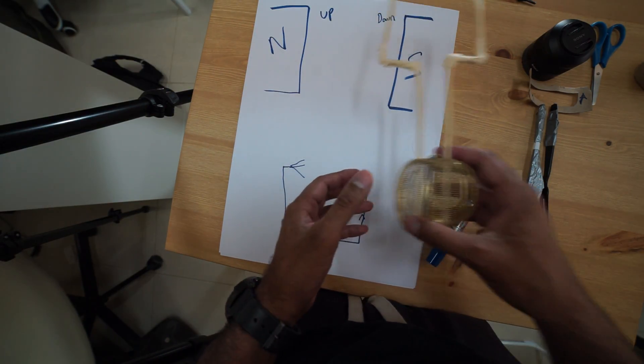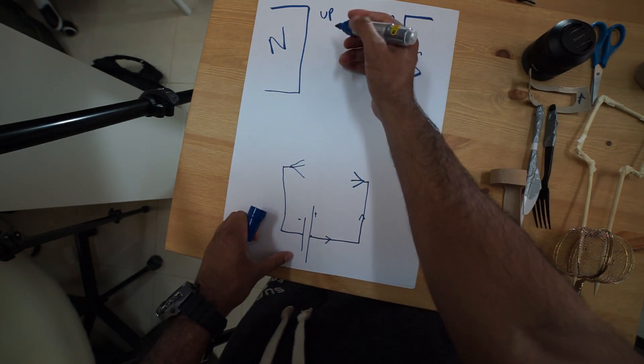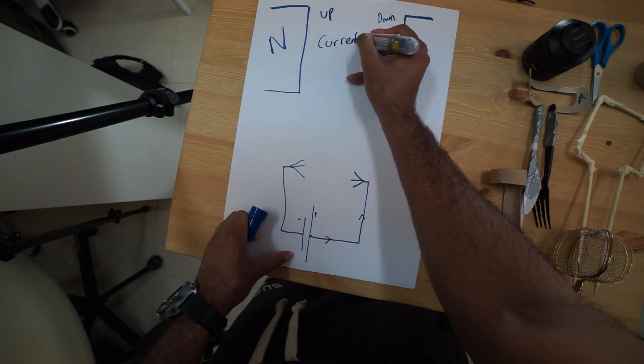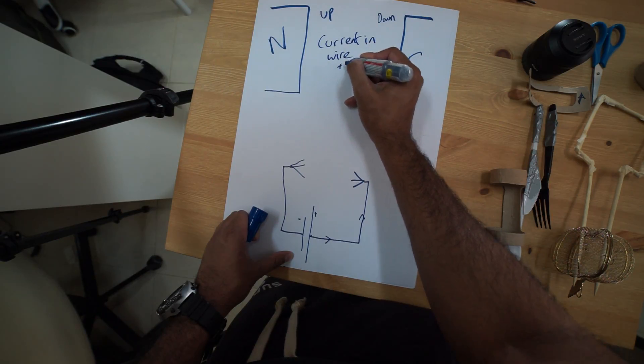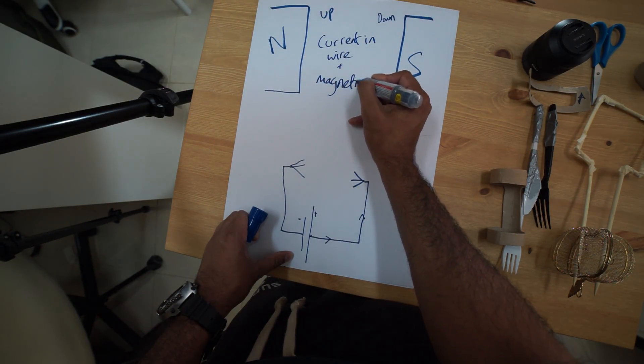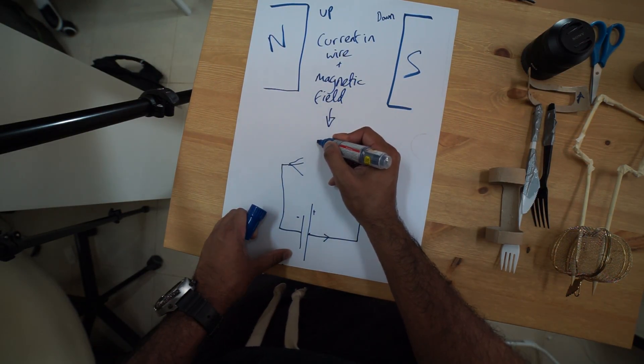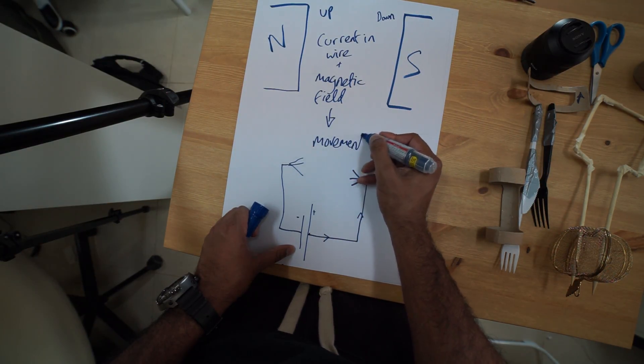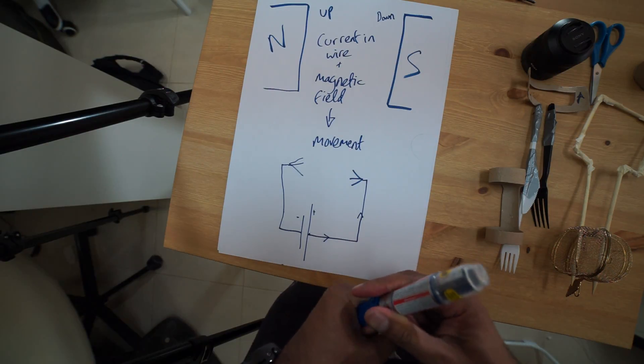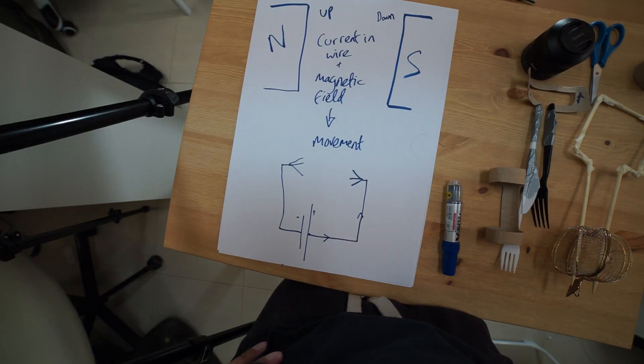Just to summarize, when you've got current in a wire plus a magnetic field, it gives us motion. Okay, there we are, that's your DC motors sorted. Thank you for watching, bye.